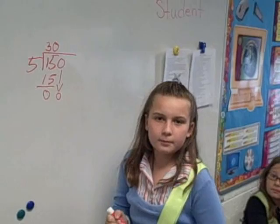And then you put the 0 up here. You put the 0 up there because 5 goes into 0 how many times? 5 goes into 0, 0 times. Perfect.